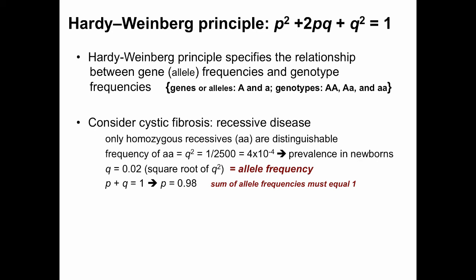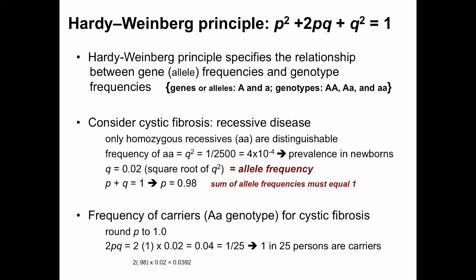If q equals 0.02, and p plus q equals 1, then p equals 0.98. The frequency of carriers (big A little a) for cystic fibrosis is 2pq, which is 2 times 0.98 times 0.02, equaling approximately 0.0392. This is very close to the actual observed carrier frequency of cystic fibrosis in the population, which is about 1 in 25.